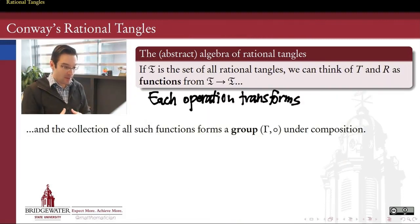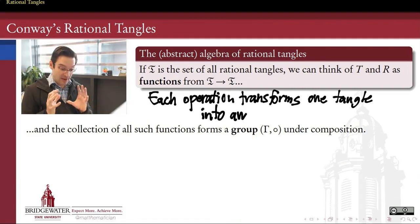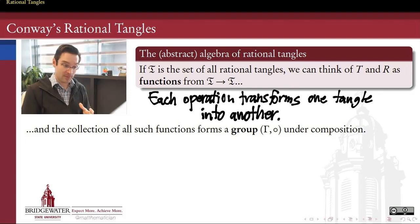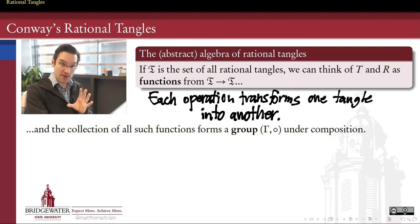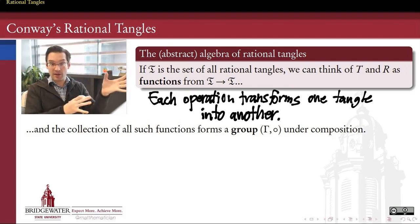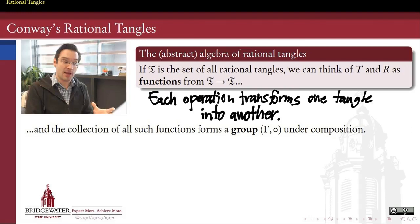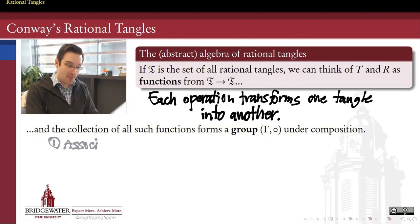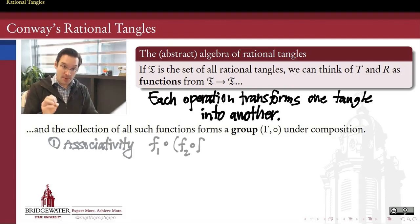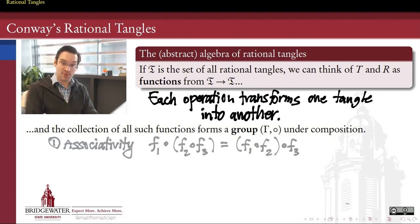Now we know enough to assert confidently that the operations we can do on rational tangles form what we call a group. The tangle group is the set of all operations that we can do on tangles. I think of an operation as a function which takes in one tangle and spits out another tangle — possibly different, possibly the same — but they differ only by a combination of T's and R's. The collection of all such functions under the operation of function composition is properly called a group in abstract algebra.